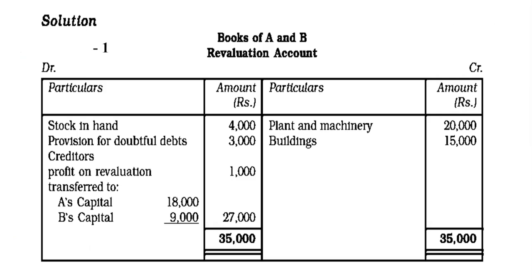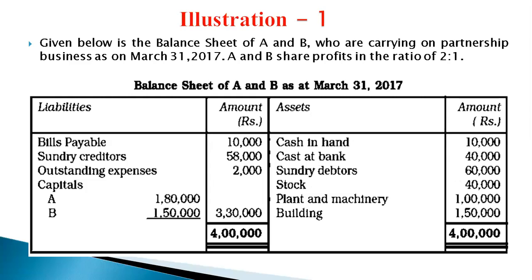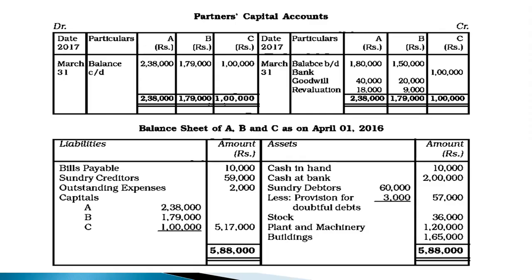The revaluation profit of 27,000 is distributed among old partners A and B in their old ratio 2:1. So A gets 18,000 and B gets 9,000. Journal entry: revaluation account debit to A's capital and B's capital. In the partners capital account, credit side first shows opening balances: A rupees 1,80,000 and B rupees 1,50,000, as given on the liability side of the balance sheet.